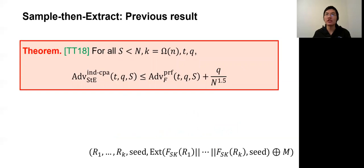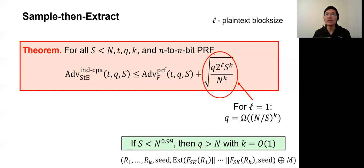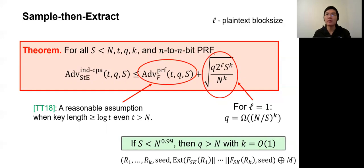Previously, Tessero and Thorvaldsen showed that the security bound of Q can achieve up to big N. However, the statement is only proven to be true when K is larger than small n for a very small amount of memory. In our work, we show a much better result, which already gives strong guarantees for a constant number of probes k. When we have a plaintext block size being 1 or constant, essentially the security bound implies that at least big N over S to the k queries are needed for an attack to achieve constant advantage. For example, if memory S is less than big N to the 0.99, then only constant number of probes are needed to achieve q larger than big N. It is important to note that the PRF advantage can be small even if t is much larger than big N, as long as the key length is larger than log t. In our paper, we also have another version of theorem for the PRP instantiation and a more theoretical construction that saves randomness usage.